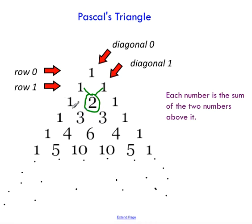For instance, three: if I add one and two, I'll get three. If I add three and three, I get six. Four and six, I get ten. And this pattern continues indefinitely.